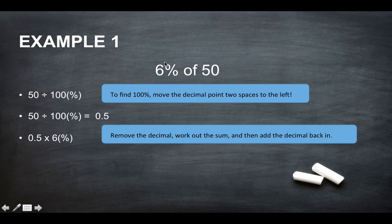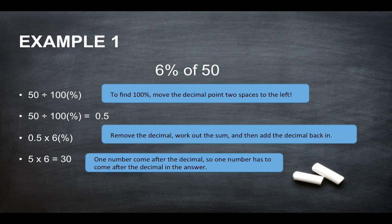Remove the decimal, work out the sum and then add the decimal back in. So you would do 5 times 6 to give you 30. One number came after the decimal, so one number has to come after the decimal in the answer.